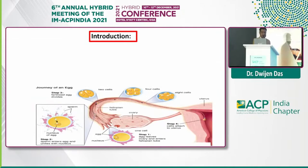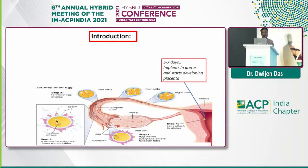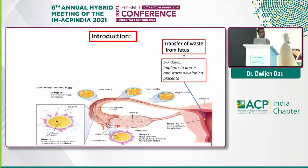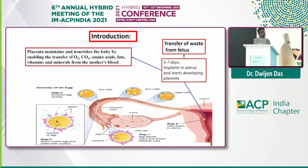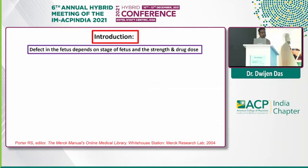If you see the physiology of pregnancy, after the fetus forms in the first step — once fertilized — within five to seven days, it gets implanted in the uterine body and development of the placenta starts. The placenta plays a very important part in transferring waste from the fetus, and it also maintains and nourishes the baby by enabling transfer of oxygen, carbon dioxide, amino acids, fats, vitamins, and minerals from the mother's blood. Defects in the fetus really depend on at what stage you are using the fetotoxic drug, and also on the strength and the dose of the drug being used.